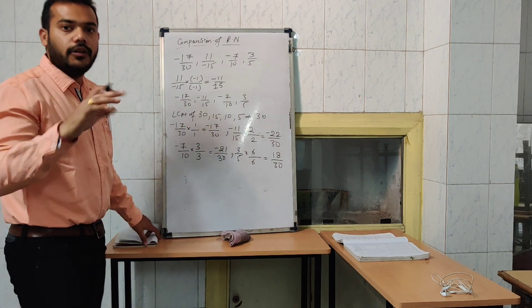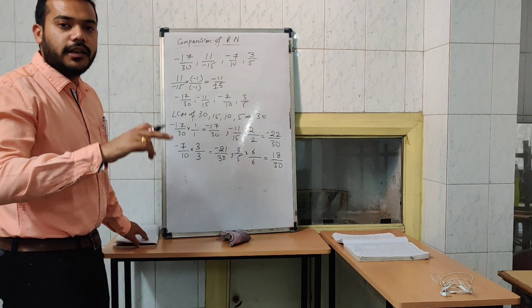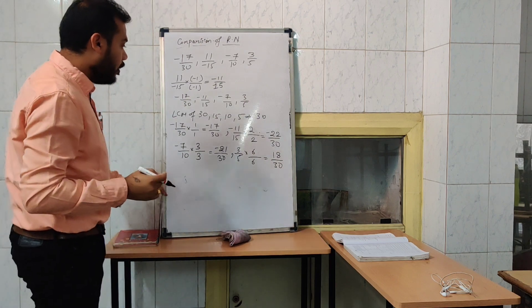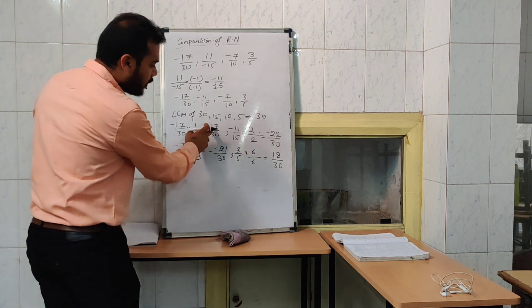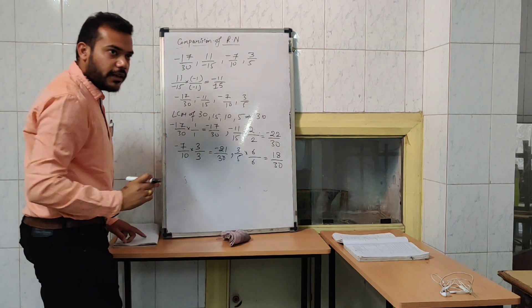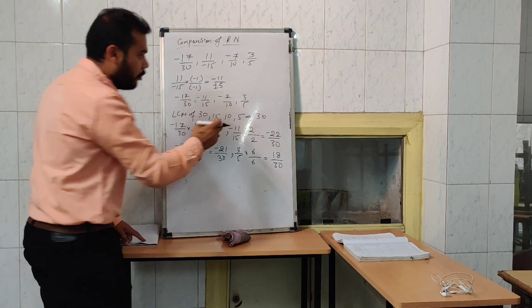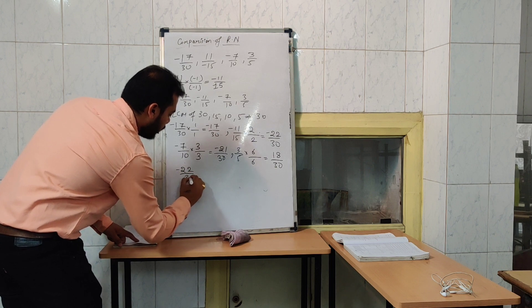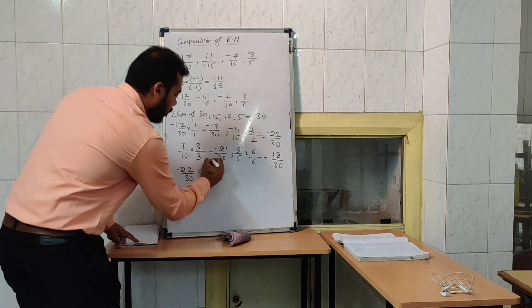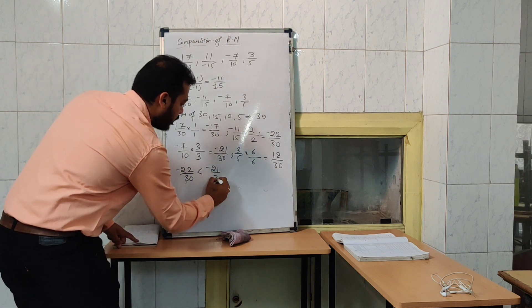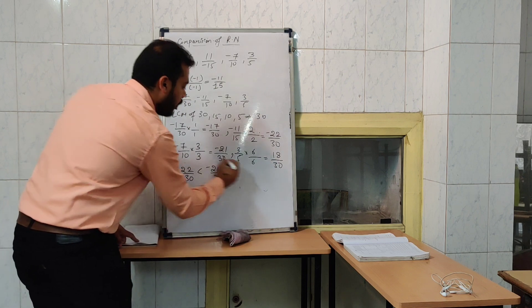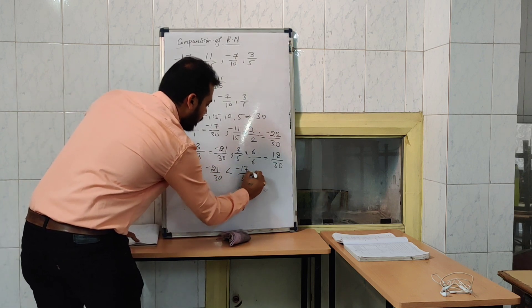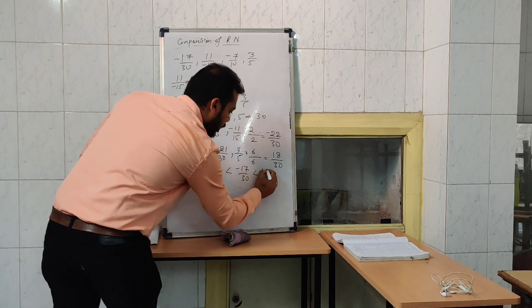The lowest numerator will be the lowest number and the highest numerator will be the highest number. The lowest numerator — is it minus 17, minus 22, or minus 21? It is minus 22 by 30. Then minus 21 by 30, then minus 17 by 30, then 18 by 30.